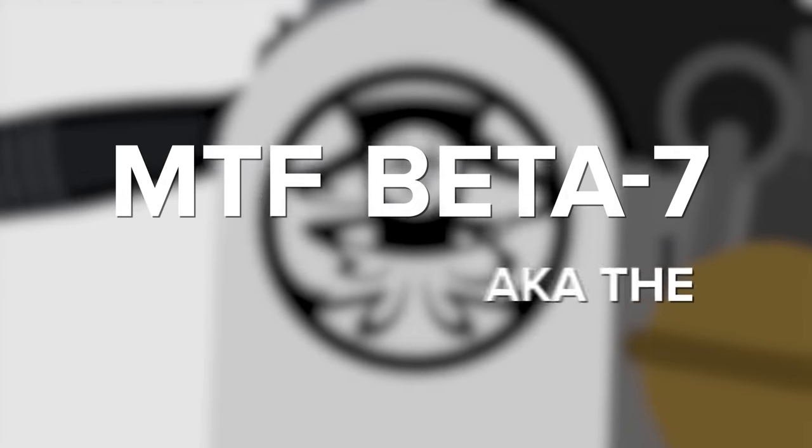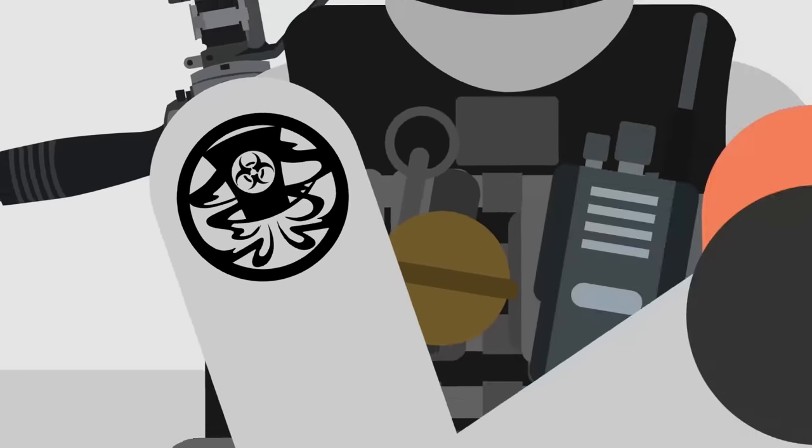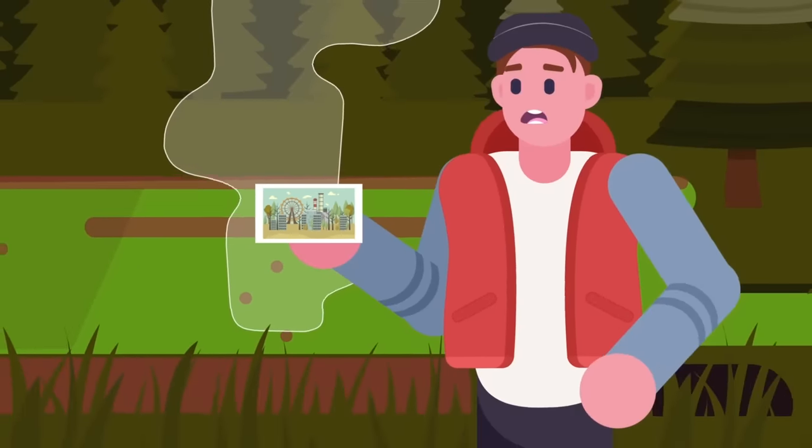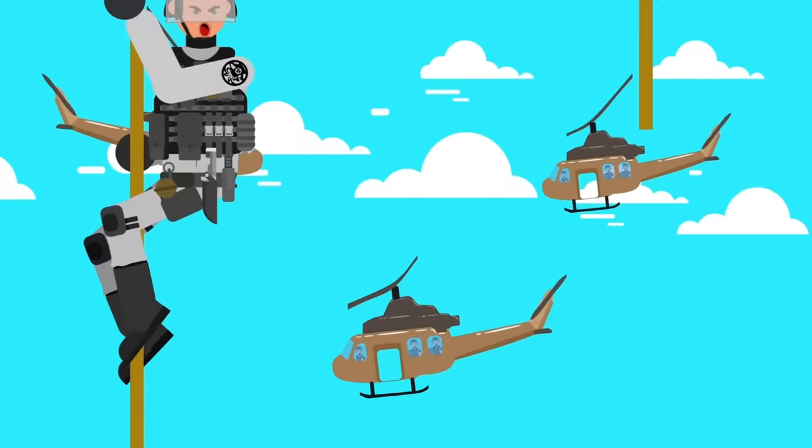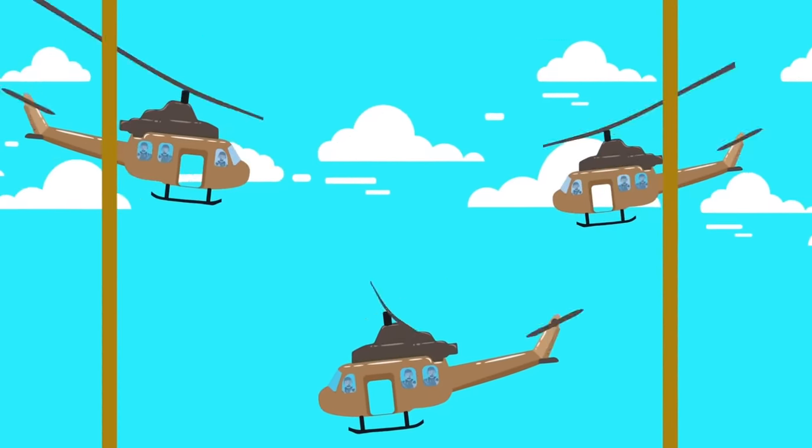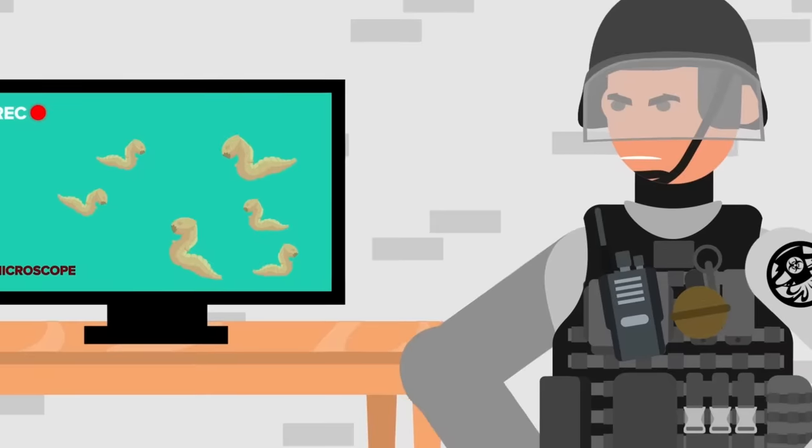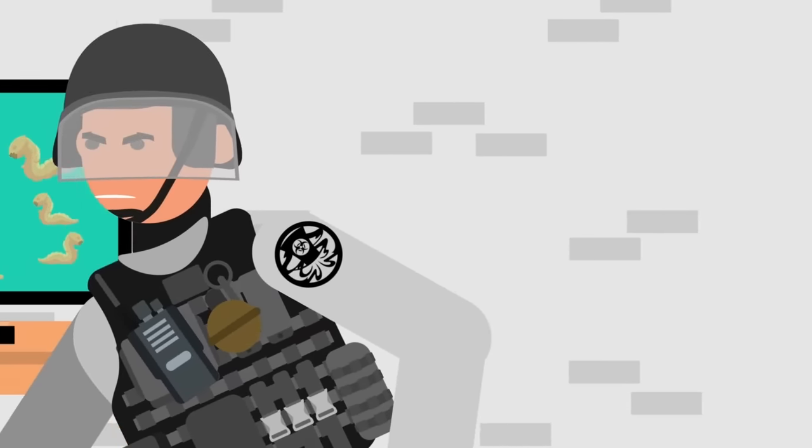MTF Beta-7, aka the Maz Hatters, are the elite cleanup crew for anomalous biohazards, chemical spills, and radiological disasters. So if an area suddenly looks like it's going to become Chernobyl's scarier sequel, or an anomalous, fast-spreading disease is wreaking havoc over a wide area, the Maz Hatters are the guys to call. They worked closely on the containment of SCP-1280, a kind of parasitic nematode worm that often injects false memories into their victims.